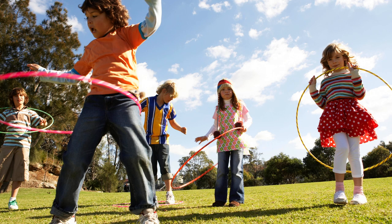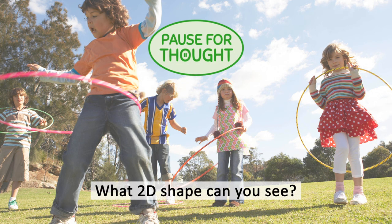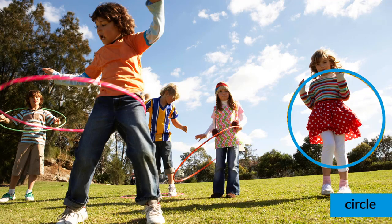2D shapes are all around us. These children are playing with hoops. What 2D shape can you see? It's a circle!